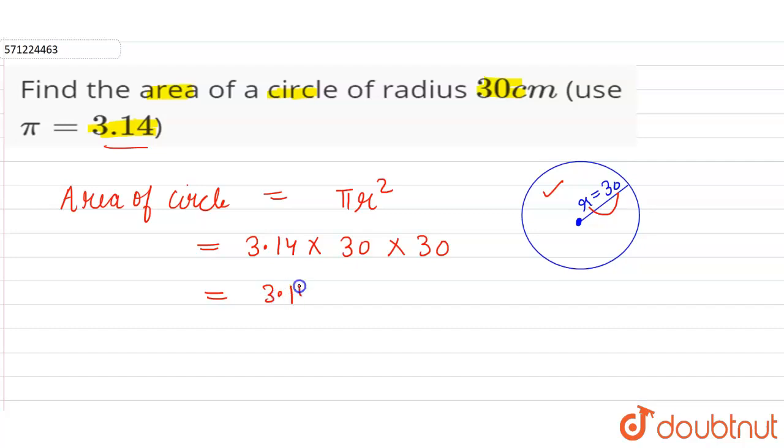So 30 into 30 is 900. So we have to calculate now 3.14 into 900. Here the decimal value is before two digits and there are two zeros here when we multiply.